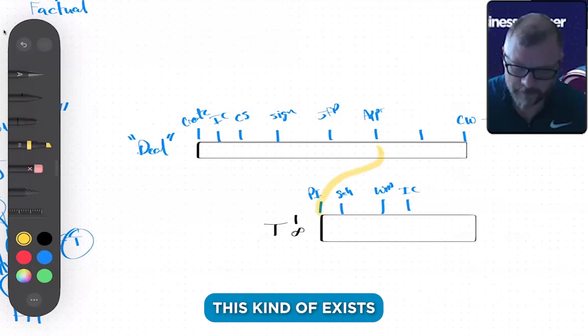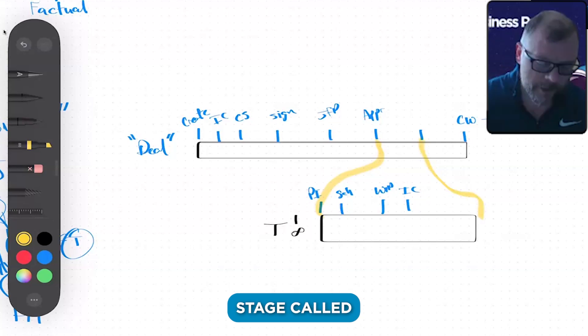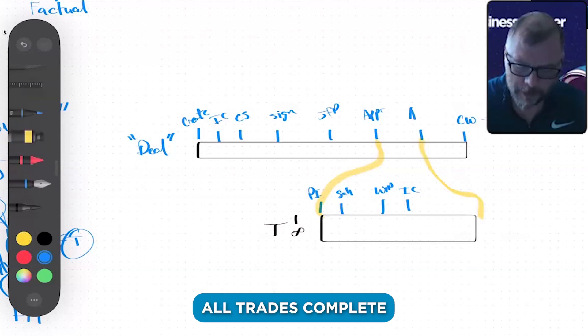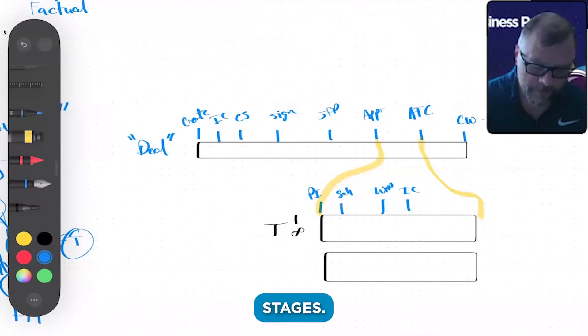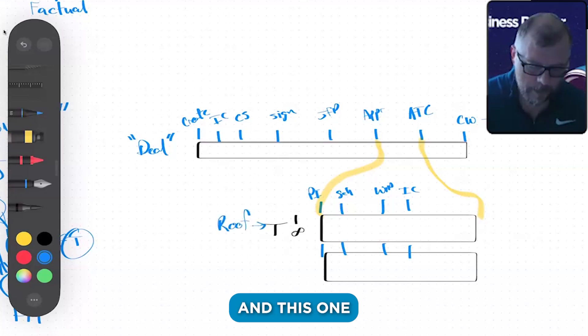This kind of exists within this, but we have a stage called all trades complete, because what it's basically saying is if we have multiple tickets that have the same stages, but this one is for the roof and this one is for the gutters.